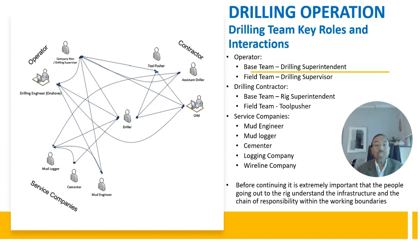It is extremely important that people going to the rig understand the infrastructure and chain of responsibility within working boundaries. The drilling supervisor reports to the drilling superintendent. The rig superintendent typically works in a field office away from the rig site and supervises multiple wells simultaneously, and the rig site contractor man reports to the rig superintendent.